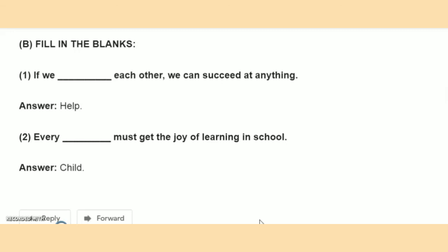Second blank: Every dash must get the joy of learning in the school. The answer is 'child' — every child must get the joy of learning in the school. Thank you for watching my video. If you like my video, please subscribe to my channel and also share this video with your friends. Thank you.